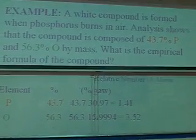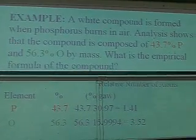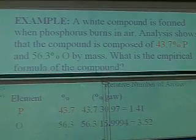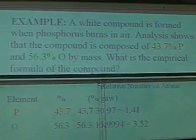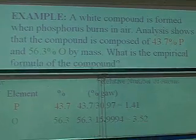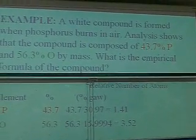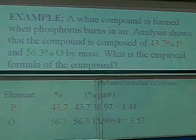And we're doing a sample. You have a white compound formed when phosphorus burns in air. Analysis shows the compound is composed of 43.7% phosphorus and 56.3% oxygen by mass. What is the empirical formula of the compound?